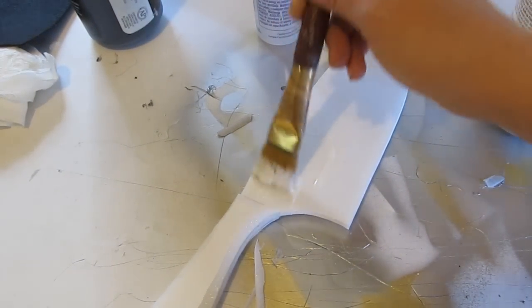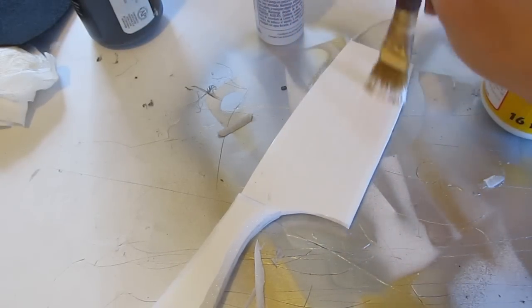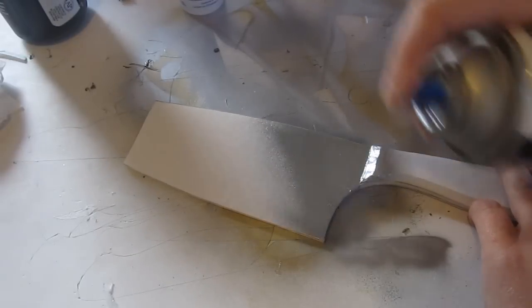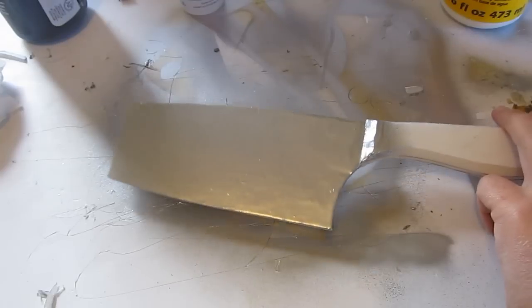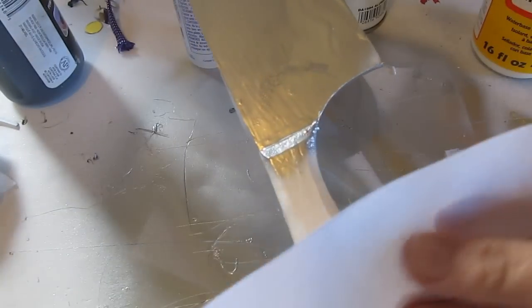So the same thing applies. Let's protect this thing with some Mod Podge. Beefs it up, strengthens it up, gives it kind of a sheen. And that is optional. And then spray paint the blade silver. If you don't have spray paint, use regular paint. And if you don't have silver, you can use a light gray. That'll be fine.